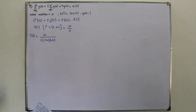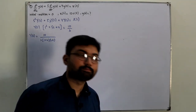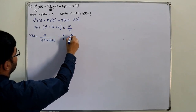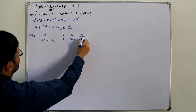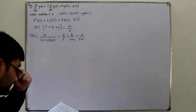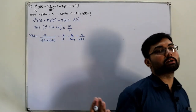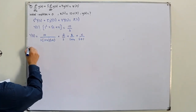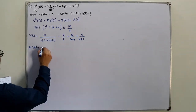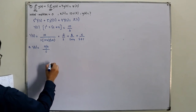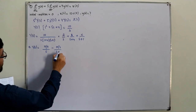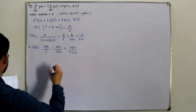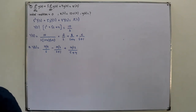We apply partial fraction expansion: Y(s) = A/s + B/(s+4) + C/(s+1). Solving (you should verify), the values are A = 10/4, B = 10/12, and C = -10/3.